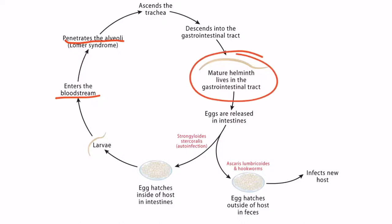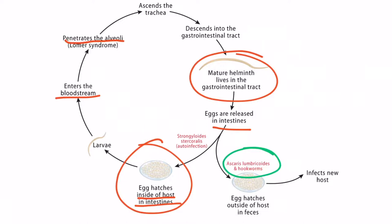Then the organism ascended the trachea and descended into the GI tract where the mature parasite remained. However, Strongyloides is unique because the eggs released from the mature helminth hatch within the intestines. So the eggs are released in the intestines and then hatch inside of the host. Here they can penetrate the gastrointestinal wall and migrate into the bloodstream, causing the cycle to repeat itself. Therefore, the unique life cycle of Strongyloides means it can cause repeated bouts of Loeffler syndrome, whereas Ascaris lumbricoides and hookworms will only cause a brief, short-lived episode of Loeffler syndrome that resolves within the first few weeks of infection. Notice that Strongyloides stercoralis eggs hatch inside of the host's intestines, meaning that unlike Ascaris lumbricoides and hookworms, eggs will not be detected in the stool. However, Strongyloides larvae will be detected in the stool. So some of the larvae remain in the intestines causing auto-infection, and some are excreted in the stool, which can be useful for diagnosing the infection.